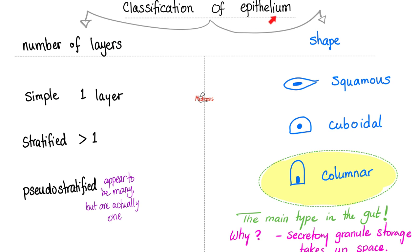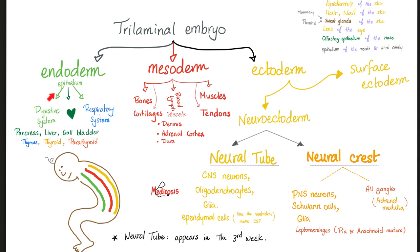Most of the epithelium in your stomach and intestine is columnar. Why does it have to be columnar? Because it has to be tall to have enough space to store the secretory granules in order to secrete. If a cell needs to secrete, it better be big. Versus the squamous flat one, it cannot secrete anything. There is no space inside to store the secretions. The epithelium that lines your gut is of endodermal origin. The muscles underneath it? Mesodermal origin. The nerve fibers? Ectodermal.